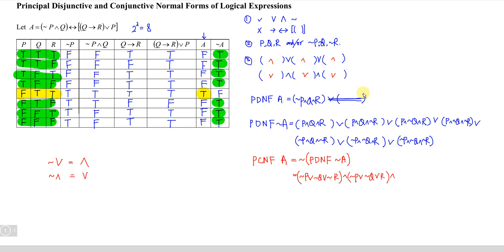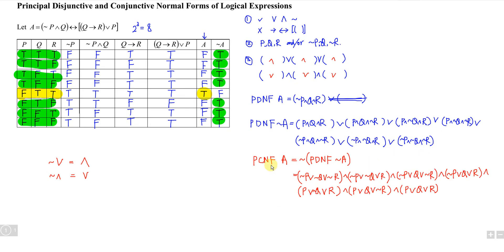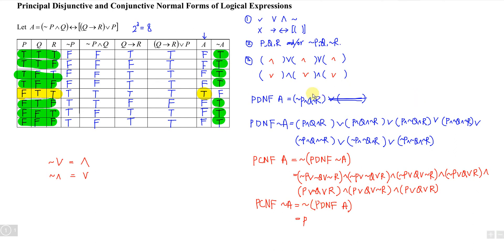For the PCNF of NOT A: PCNF of NOT A is equivalent to the negation of PDNF of NOT A, so negation of D becomes C, and negation of A becomes NOT A. We take the negation of the logical expression: negation of negation cancels, so P; disjunction becomes conjunction; and we get negation Q, negation R.